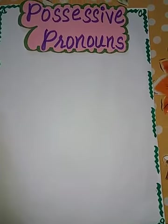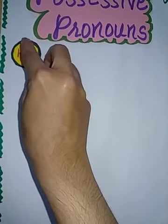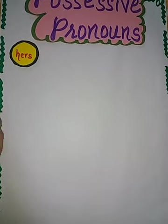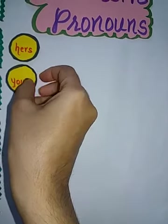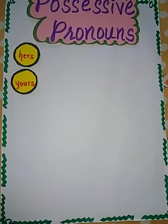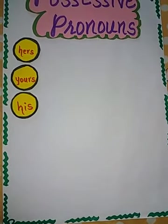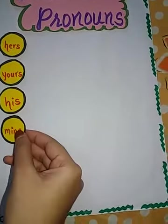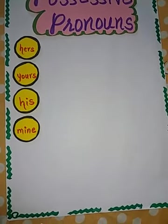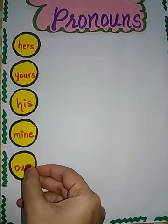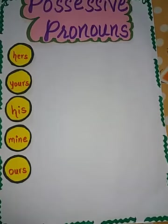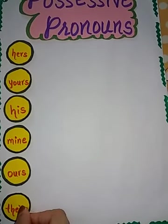So do you know what are the examples of possessive pronouns? Let us see one by one. The first example is hers. Second is yours. Third is his. Fourth is mine. Fifth is ours. And sixth is theirs.